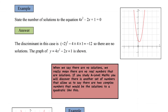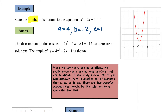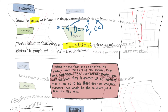Let's look at this example: state the number of solutions to the equation 4x squared minus 2x plus 1. This is asking for the number of solutions, not to solve the equation — so you just need to use the discriminant. Identify a, b, and c: a is 4, b is negative 2, and c is 1. Substituting into b squared minus 4ac gives us negative 12. Since the discriminant is less than zero, there are no real solutions for this quadratic equation. You can see on the graph it's above the axis.